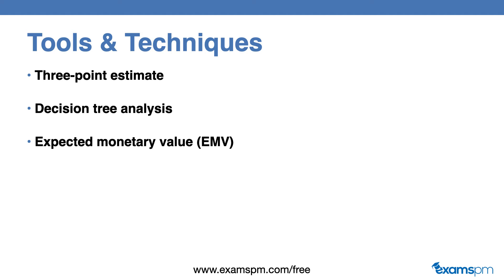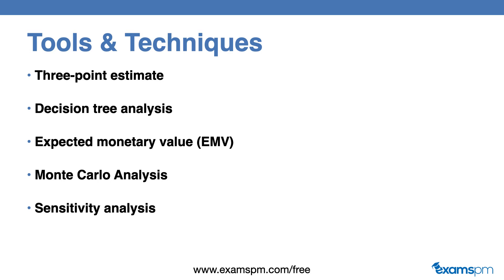EMV stands for expected monetary value — this is a method used to establish the contingency reserve for a budget or schedule. Monte Carlo analysis is a technique that uses optimistic, most likely, and pessimistic estimates to determine the total project cost or completion dates. For example, we could estimate that the probability of completing a project at a cost of $20 million is about 80%, telling you how likely you are to achieve the project at a certain cost level.